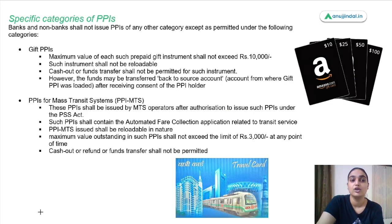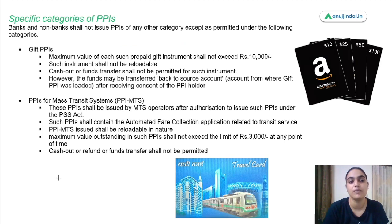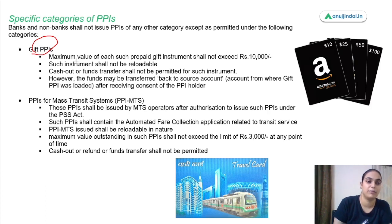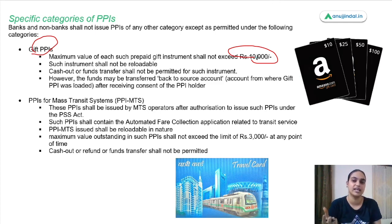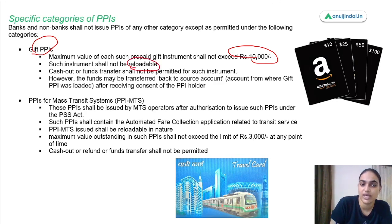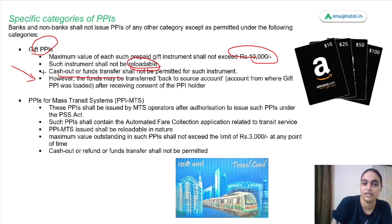Now moving to specific categories of PPIs — gift PPIs and mass transit PPIs. Gift PPIs are a type of prepaid payment instrument where the maximum value shall not exceed 10,000. You can use a gift card of say 100 or 1,000 rupees to purchase available goods or services. These instruments are not reloadable, and cash-out or fund transfer is not permitted. However, if money was provided from a source account, it can be transferred back to that source.